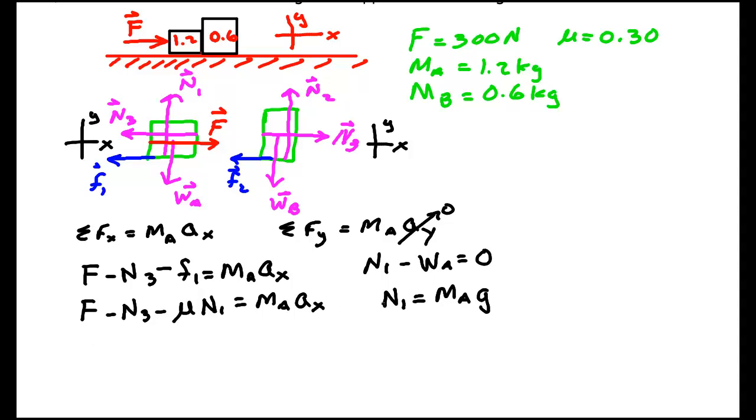Okay, this gives me, substituting this in for the normal, F minus N3 minus μMA times G is equal to MA times AX. This is equation one that we're going to want to use.